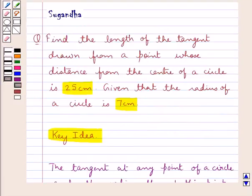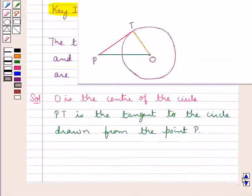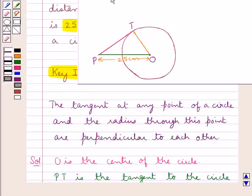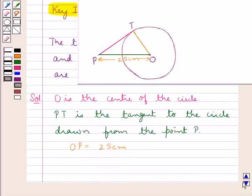And it's given that the distance of this point from the center of the circle is 25 centimeters, so this means that OP is equal to 25 centimeters. Also, we have that the radius of the circle is 7 centimeters, so this means that OT is equal to 7 centimeters.